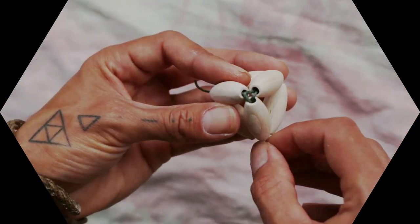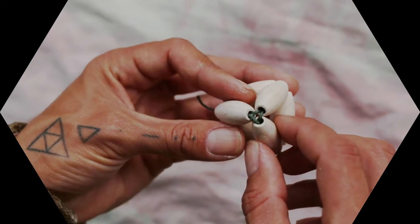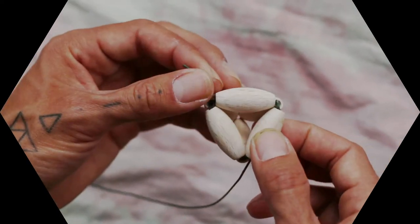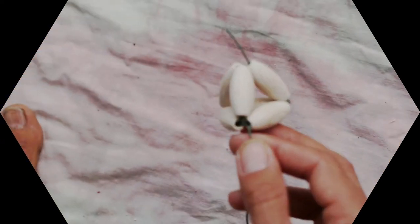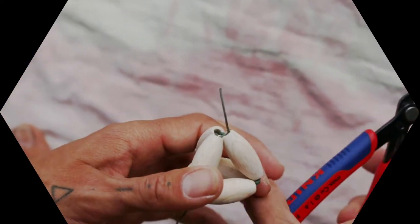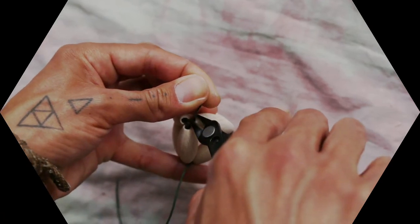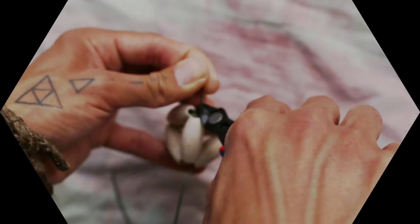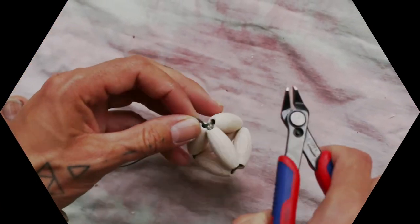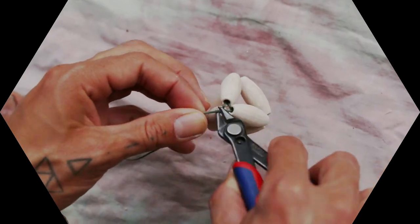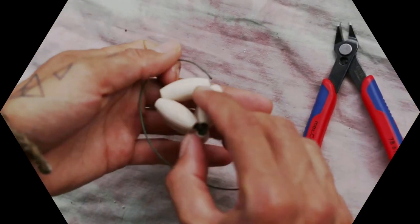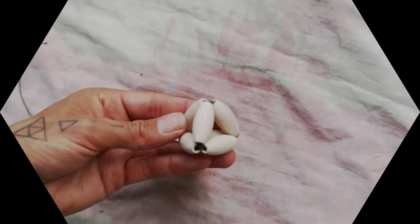Pull that through. So that is how that corner looks like. Now we got these two remainders of the string which we can just cut off. One, two. And that is the four eyes.